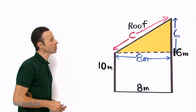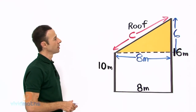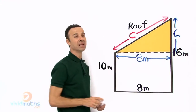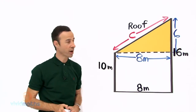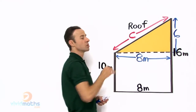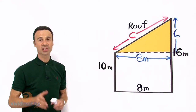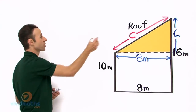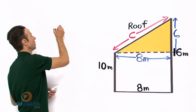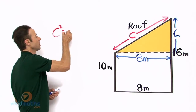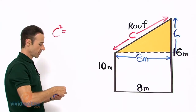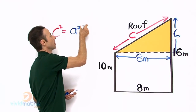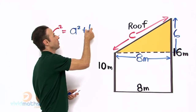Let us take another closer look and check. We have 6 here and 8 there — it is a right angle triangle. We are looking for the hypotenuse, which is the roof, and that is C. So let us put it into the equation now. C squared equals A squared plus B squared.